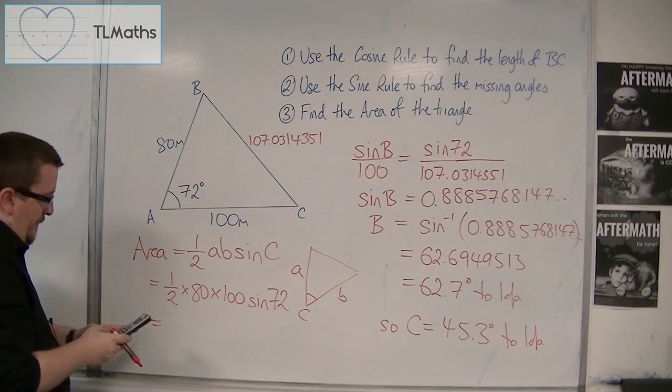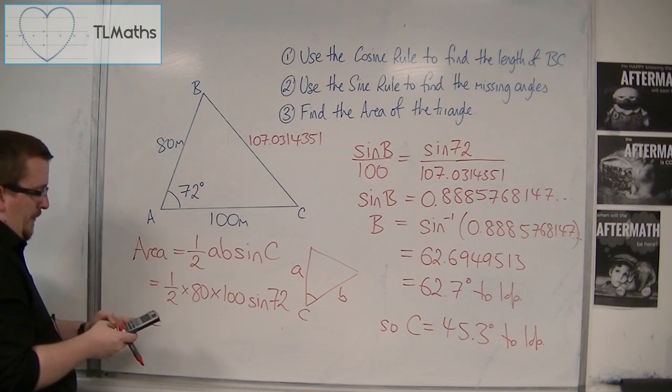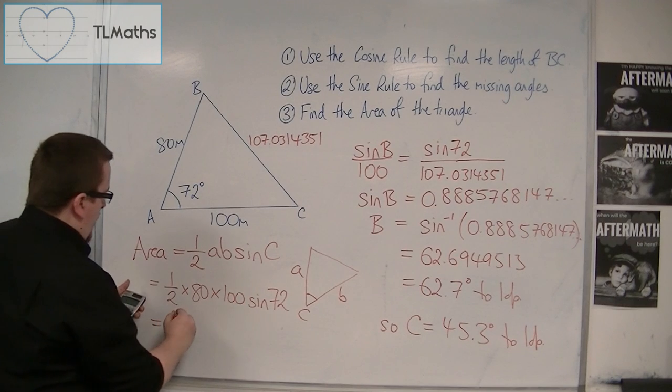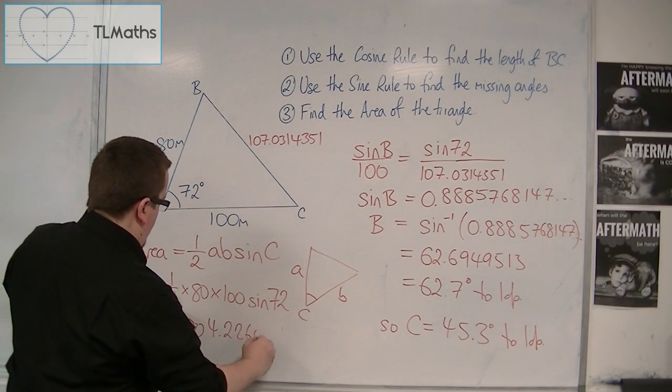So, 1 half times 80, times 100, times sine of 72. And that gets me 3804.226065.